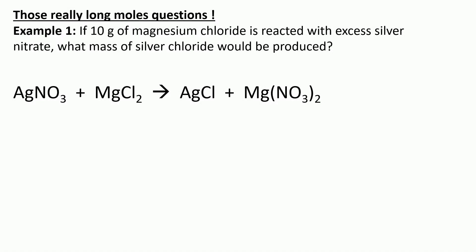Example 1: if 10 grams of magnesium chloride is reacted with excess silver nitrate, what mass of silver chloride would be produced? In the exam they will always provide you with the symbol equation. The first thing we do is write the information from the question underneath the symbol equation. So we've got 10 grams of MgCl2, we're looking for silver chloride, and we can cross out the other two formulas in the equation.